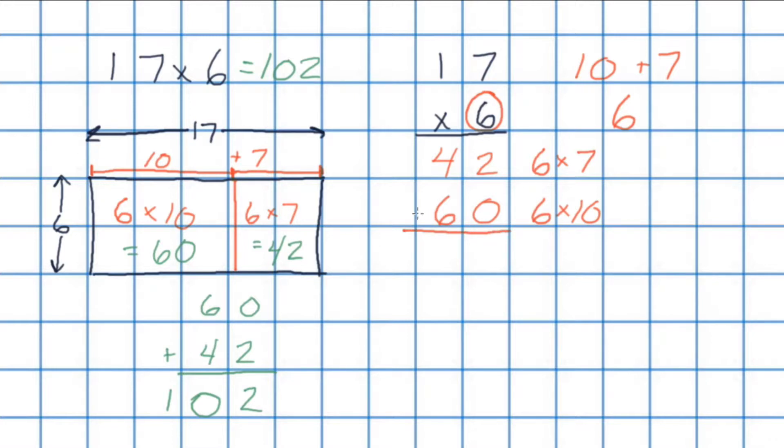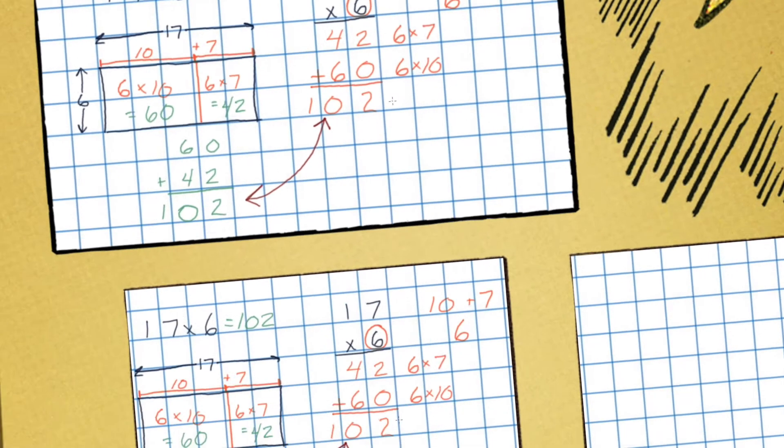Now, as we did before, we can add these together. So 2 plus 0 is 2 and 4 plus 6 is 10. So as we can see from both our area model and our partial products that we have a solution of 102 for both. So really, what you're doing with the partial products is instead of drawing out this diagram and creating the two smaller rectangles, you are essentially creating these two smaller rectangles, one with an area of 42, one with an area of 60, and as we did here, you are adding them together to find that final solution.